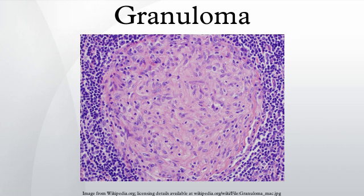Cat scratch disease is an infection caused by the bacterial organism Bartonella henselae, typically acquired by a scratch from a kitten infected with the organism. The granulomas in this disease are found in the lymph nodes draining the site of the scratch. They are characteristically suppurative, i.e., pus-forming, containing large numbers of neutrophils. Organisms are usually difficult to find within the granulomas using methods routinely used in pathology laboratories.